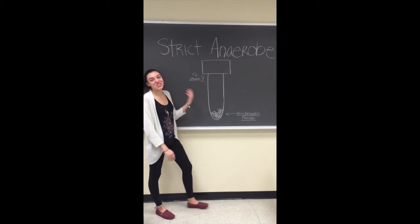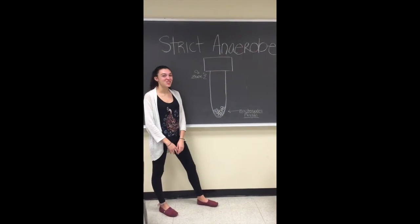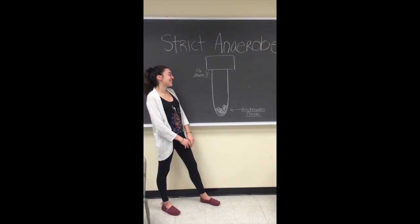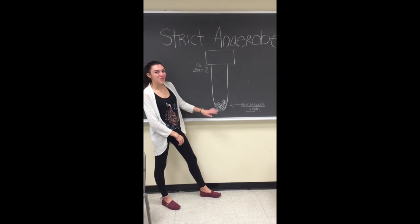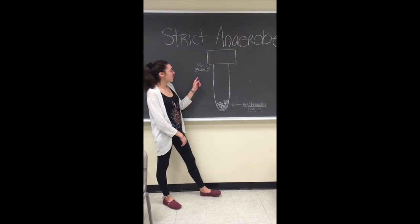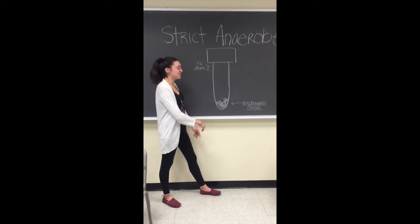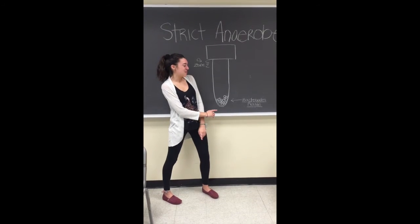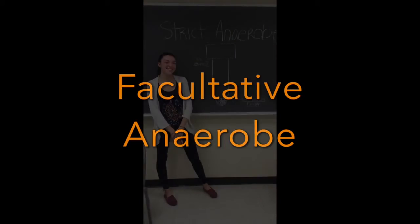This is a strict anaerobe, which is oxygen toxic. The bacteria grow away from the O2 zone at the bottom of the tube, and an example of this would be Bacteroides fragilis.